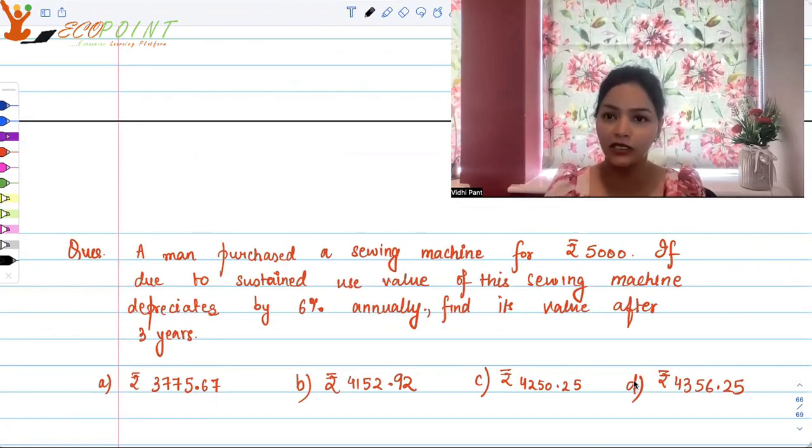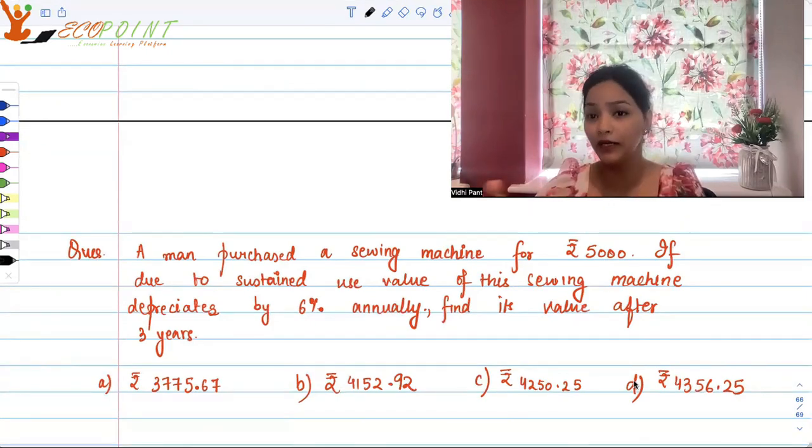So it is continually depreciating. So when it is depreciating, logically, this year depreciate hua, let's say, this is the first year. So this year depreciate hua, to next year ki shuruaat se if I'm applying interest, interest in the sense depreciation, to woh depreciated amount pe lagega na.